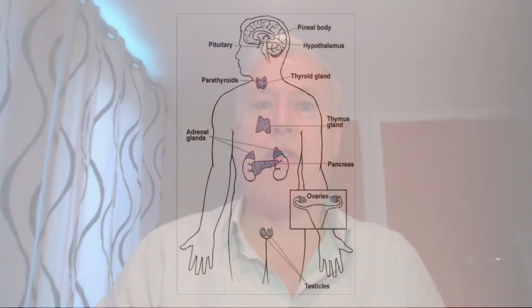Too many or too few hormones can lead to underactivity or overactivity. Here is a diagram which shows the various endocrine glands within the body. The hypothalamus and pituitary, which lie within and just below the brain, act as a central control for many of the other endocrine glands and are often referred to as the leader of the endocrine orchestra.